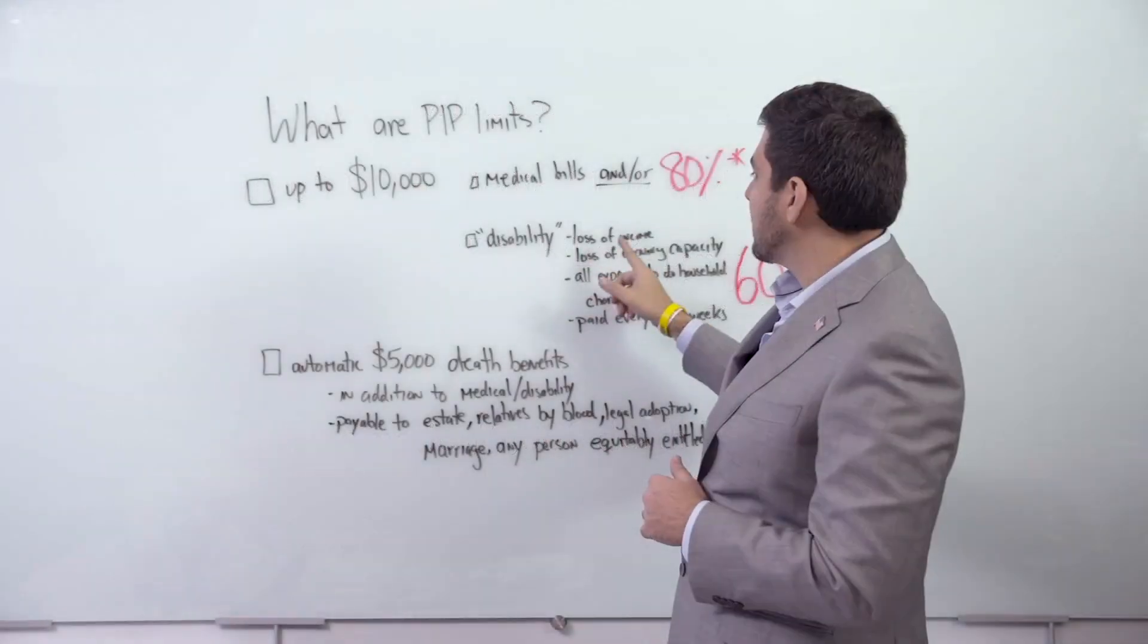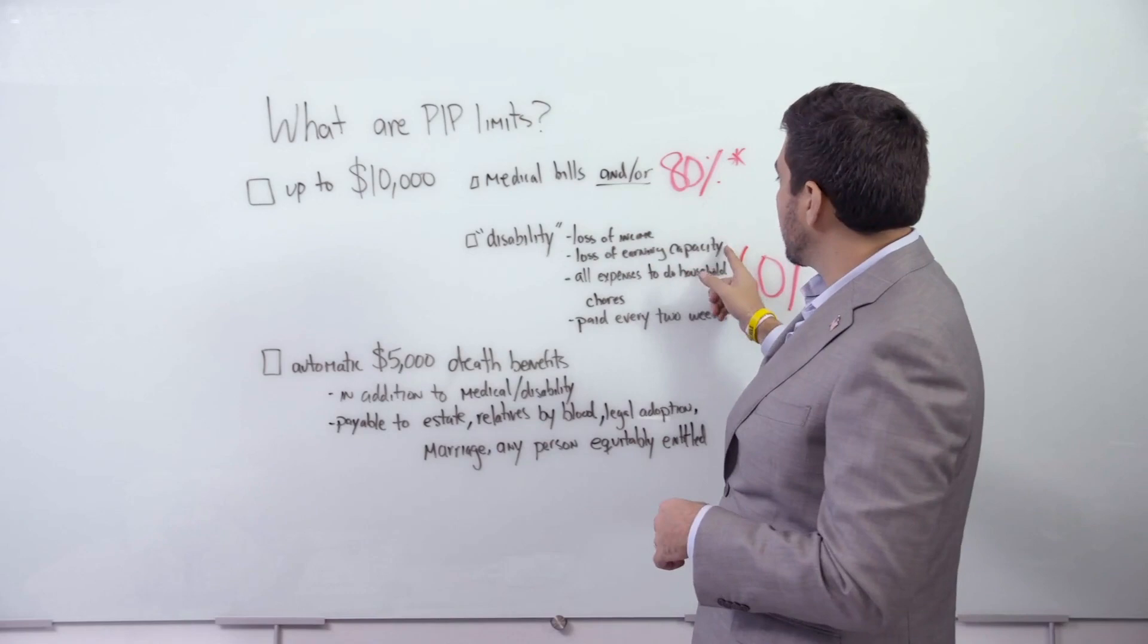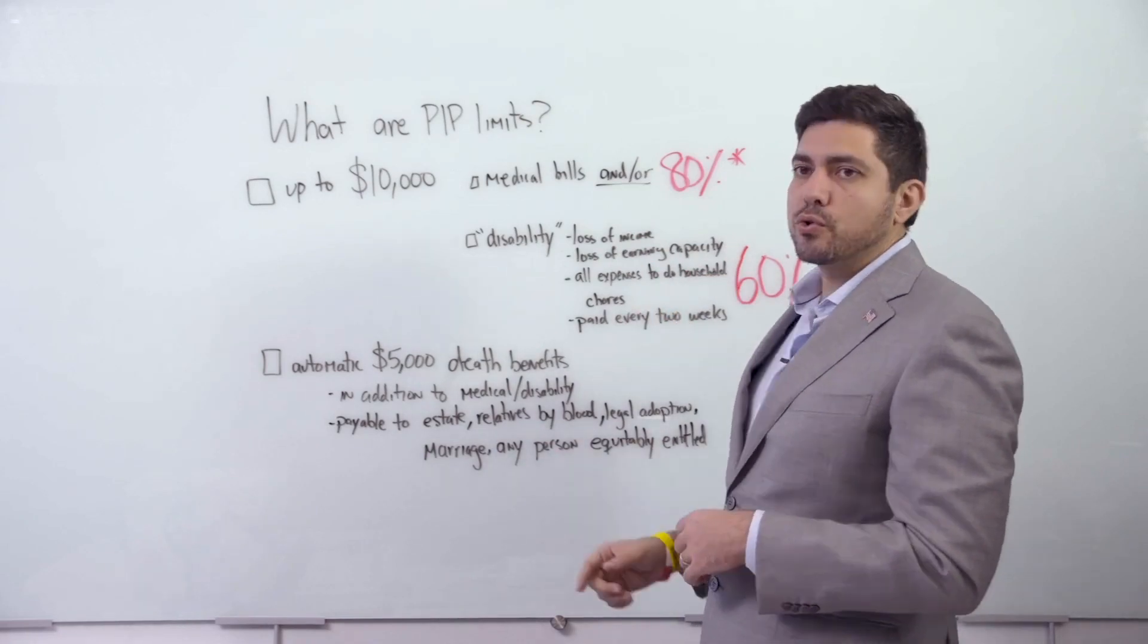They define disability benefits as loss of income, which we call lost wages, loss of earning capacity, and all expenses to do household chores.